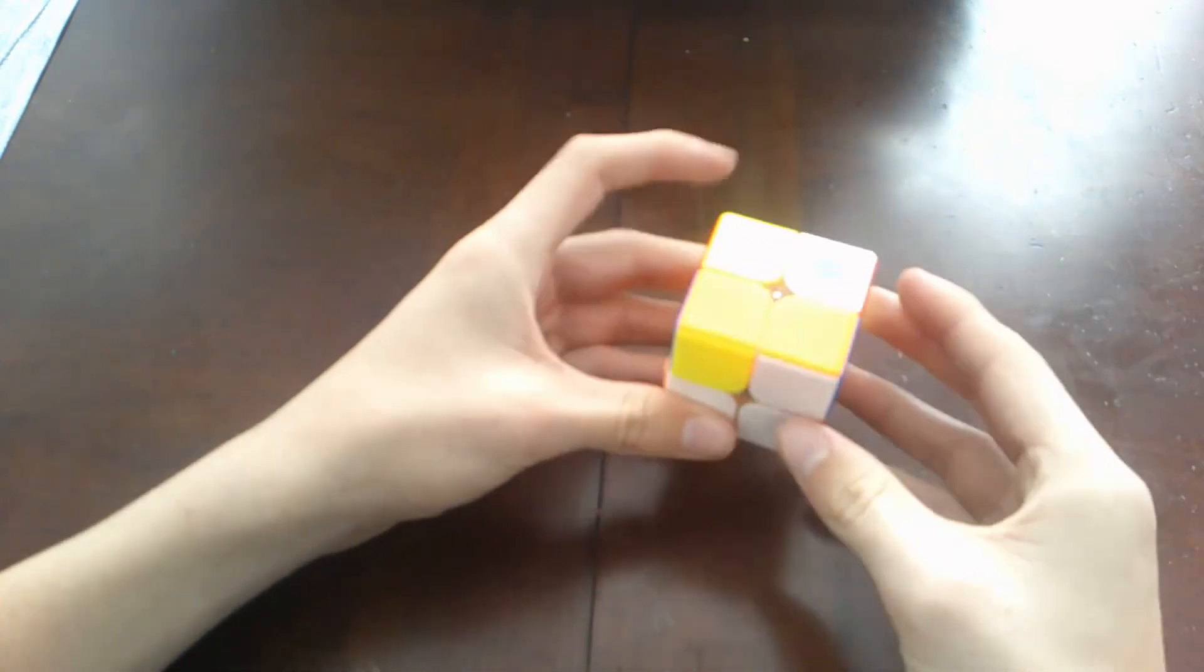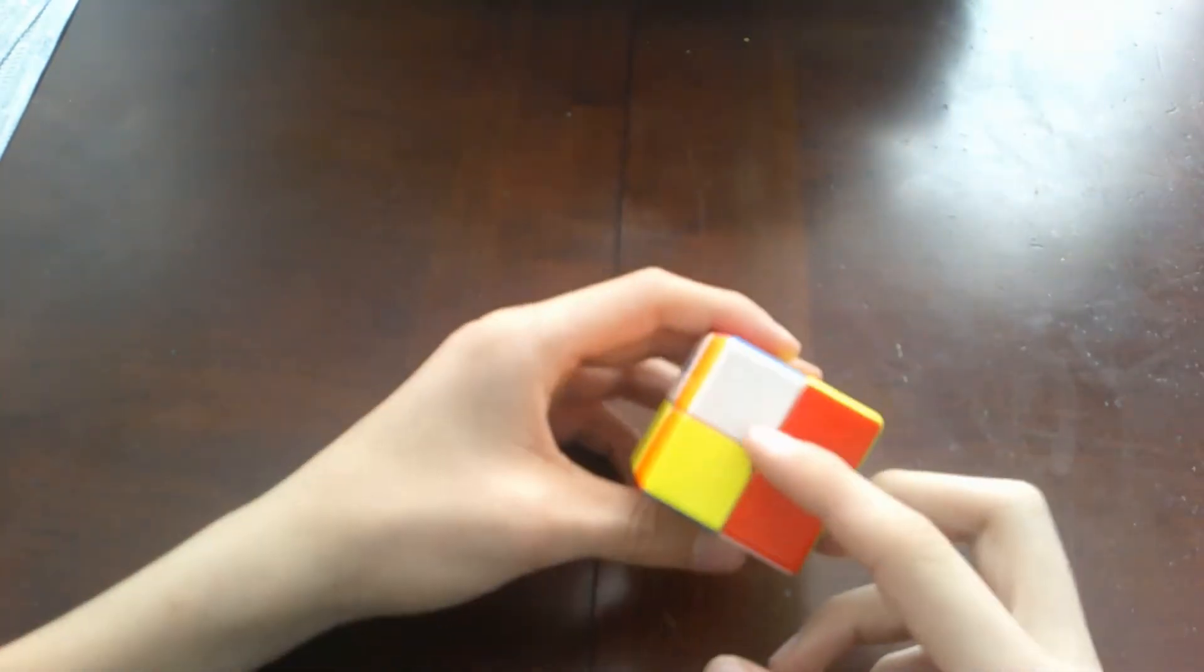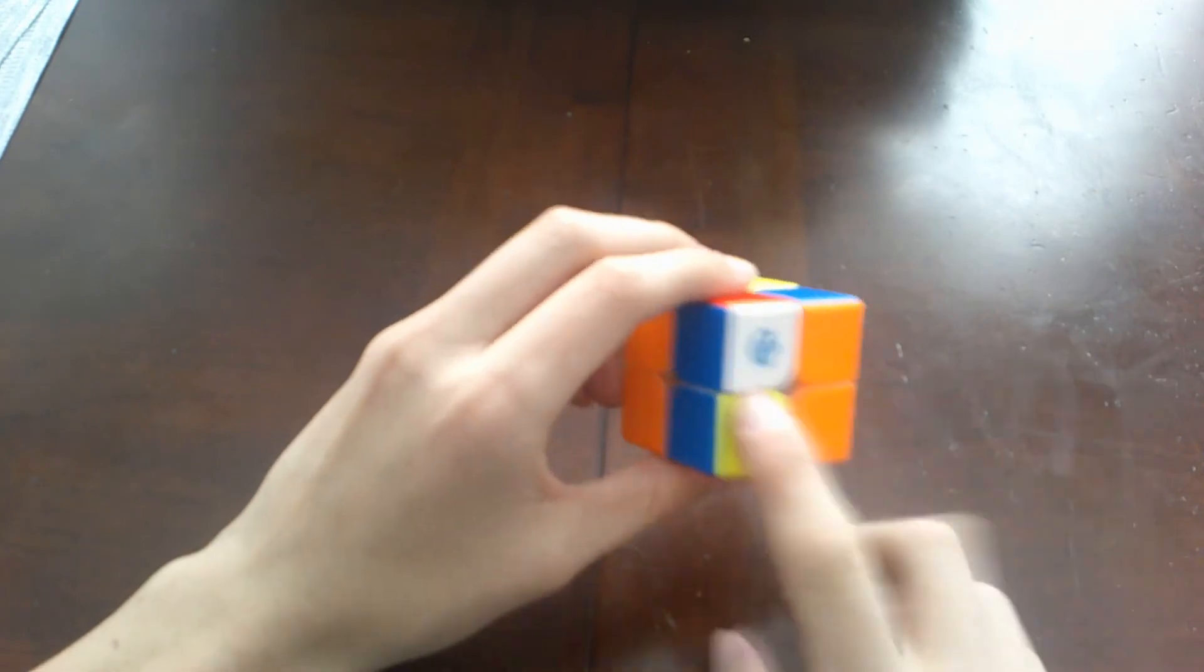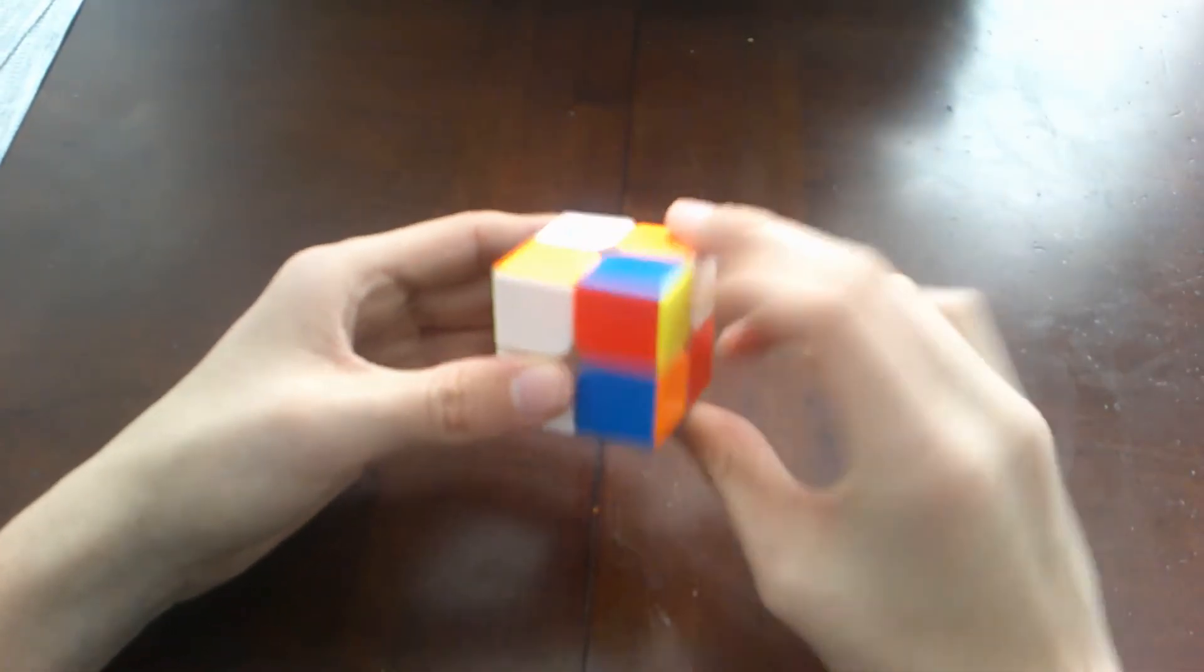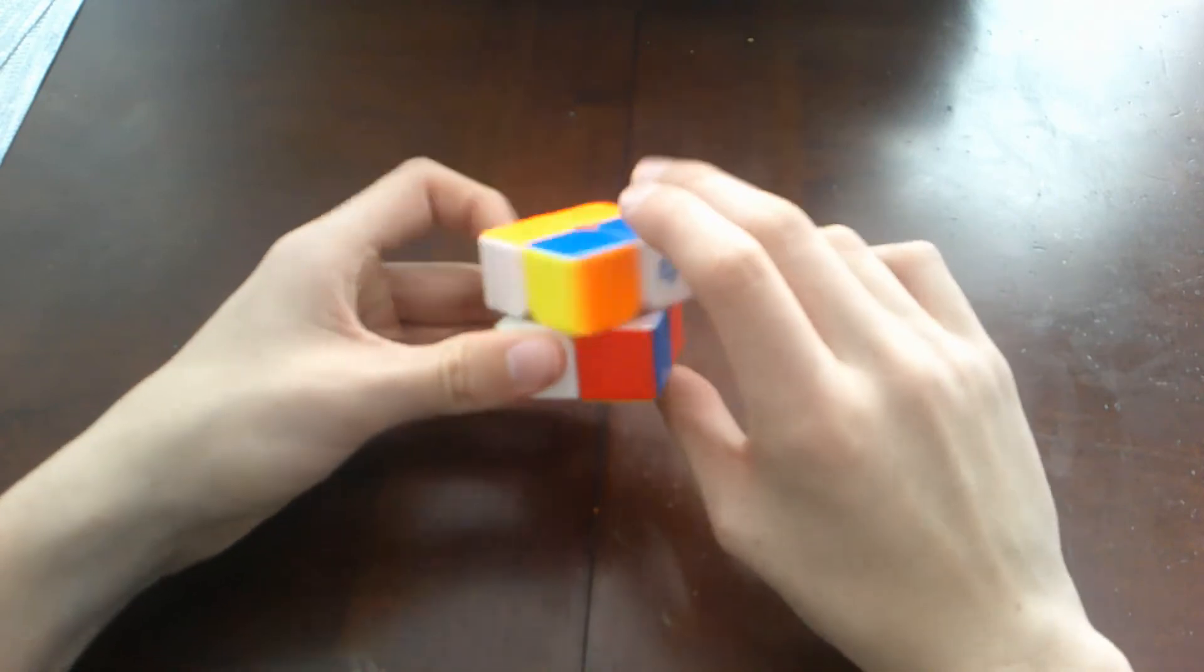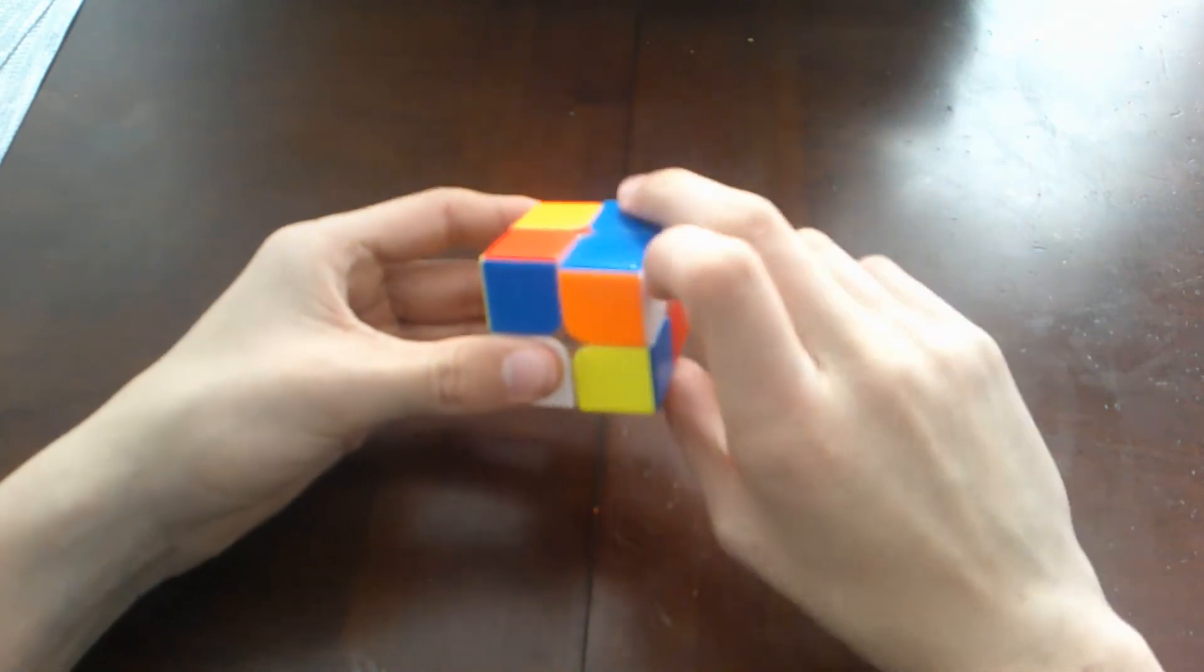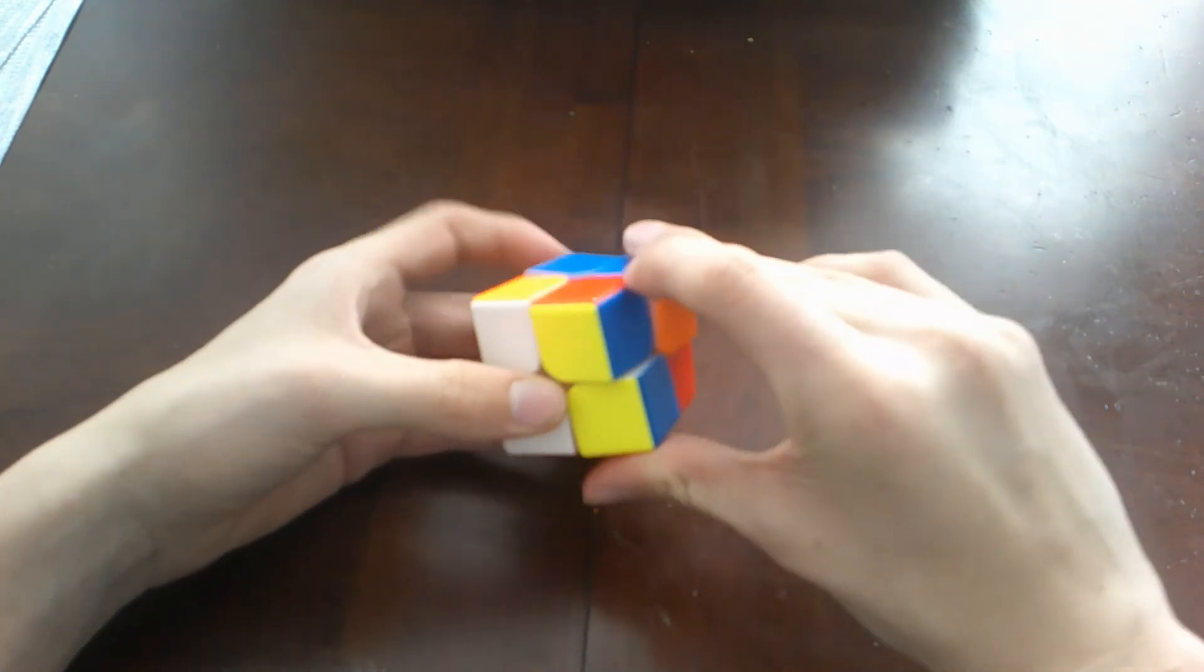Alright, so when it's like this on the last stage, you want to bring the bar to your left and then just do this algorithm: F R U R' U' R U R' U' and then F.